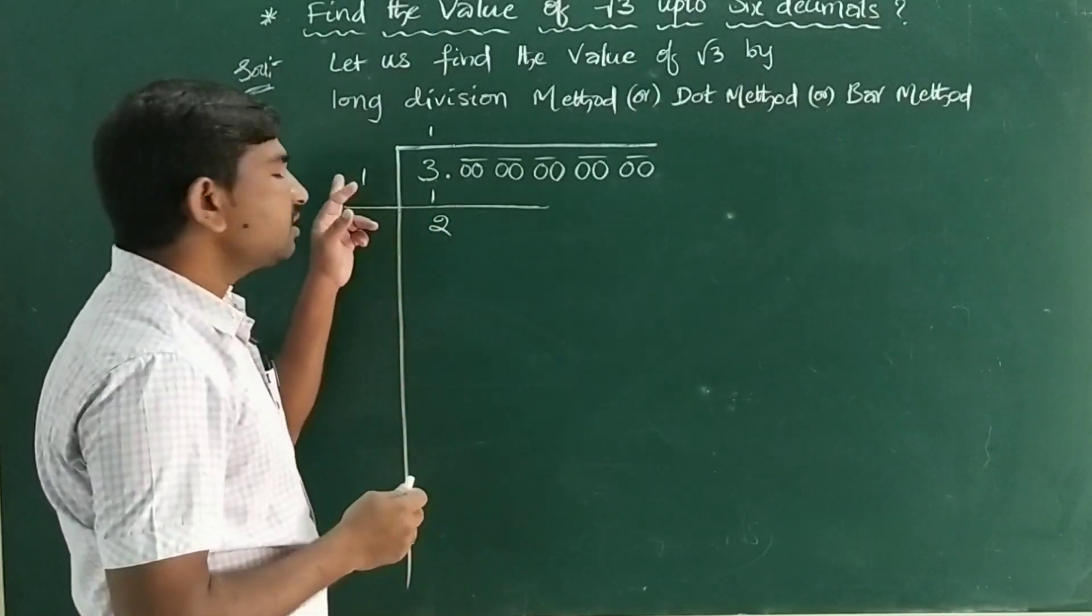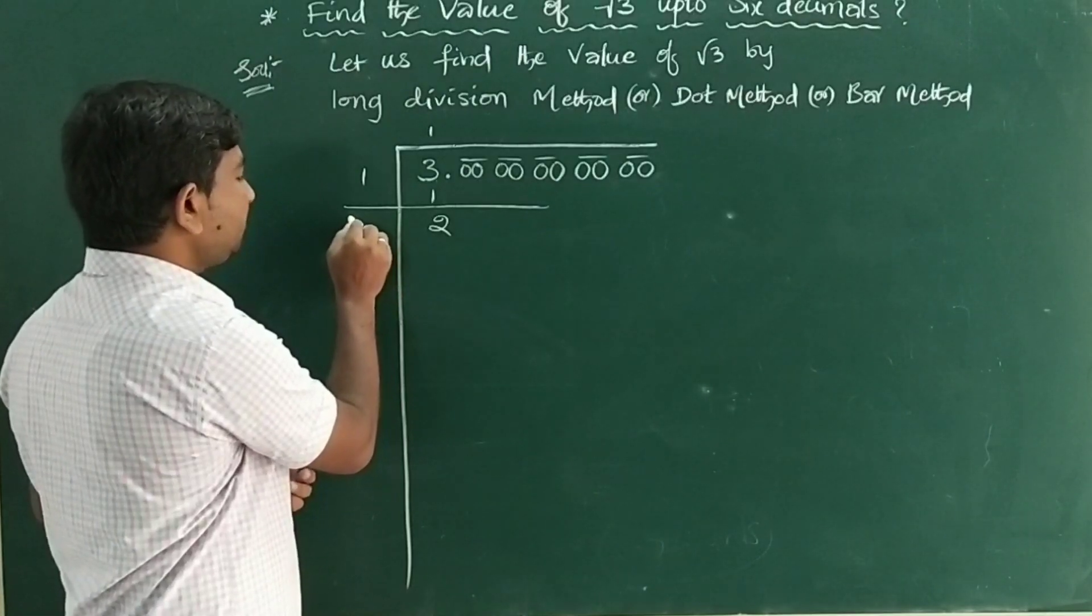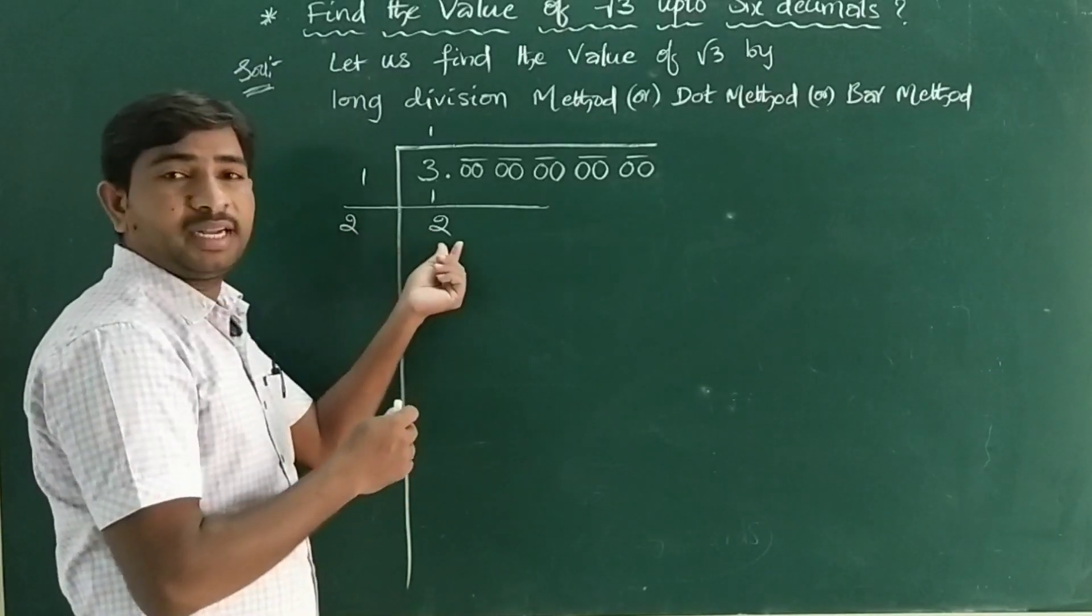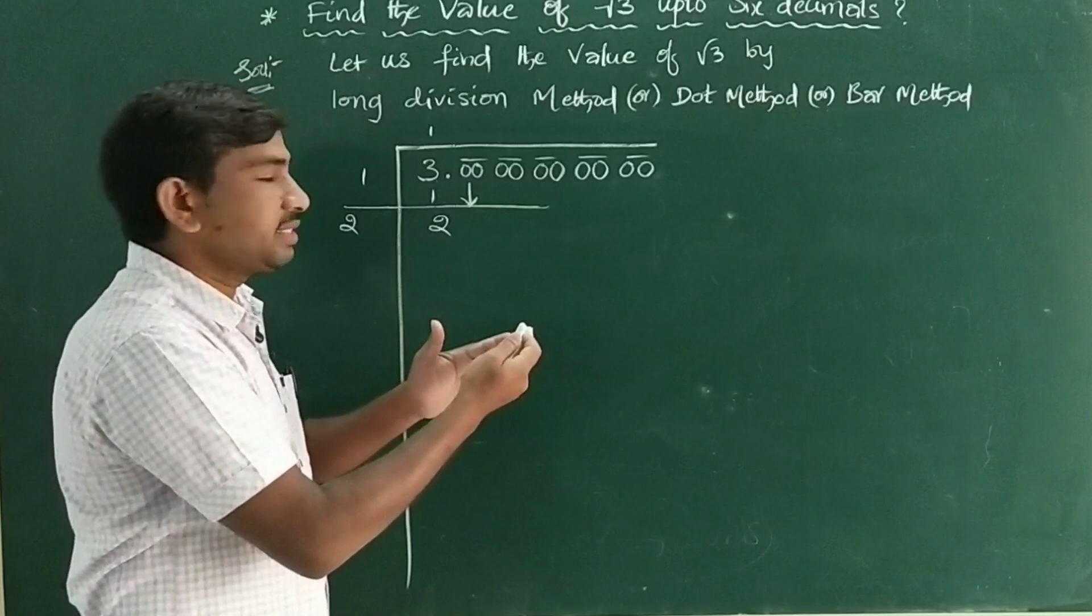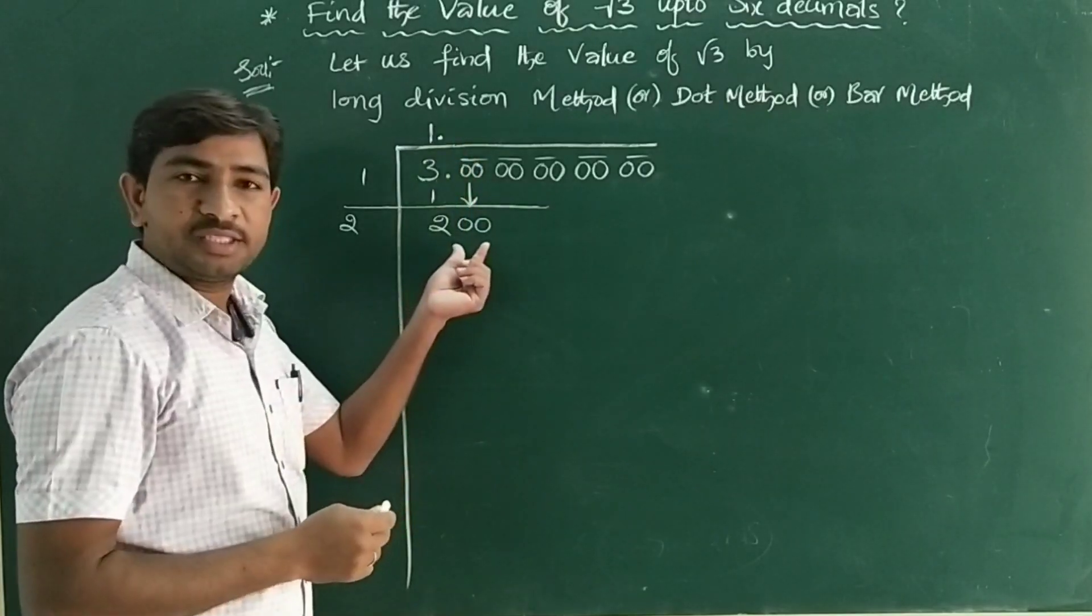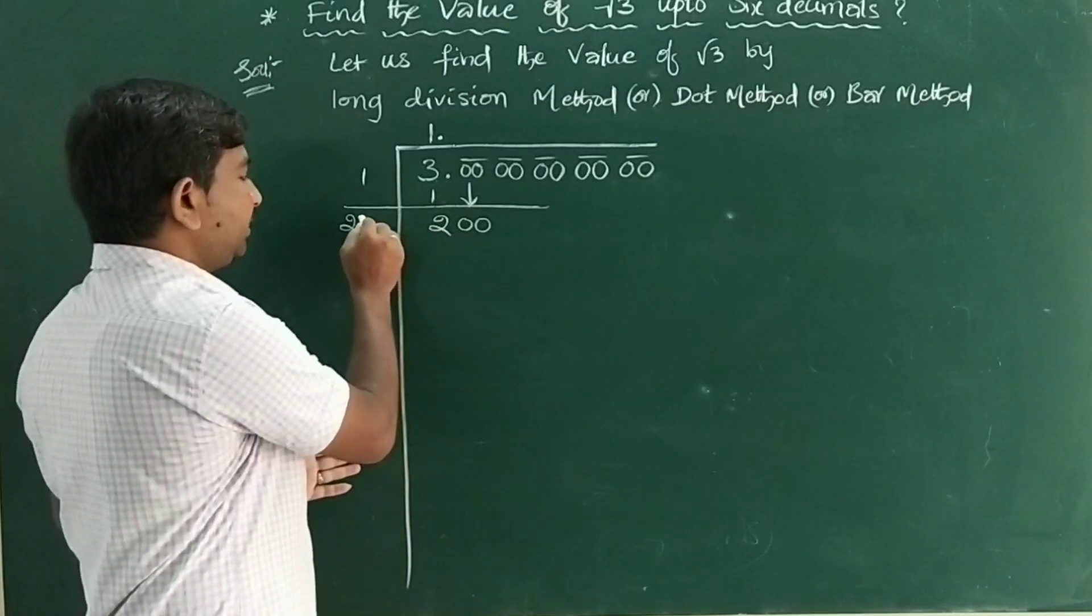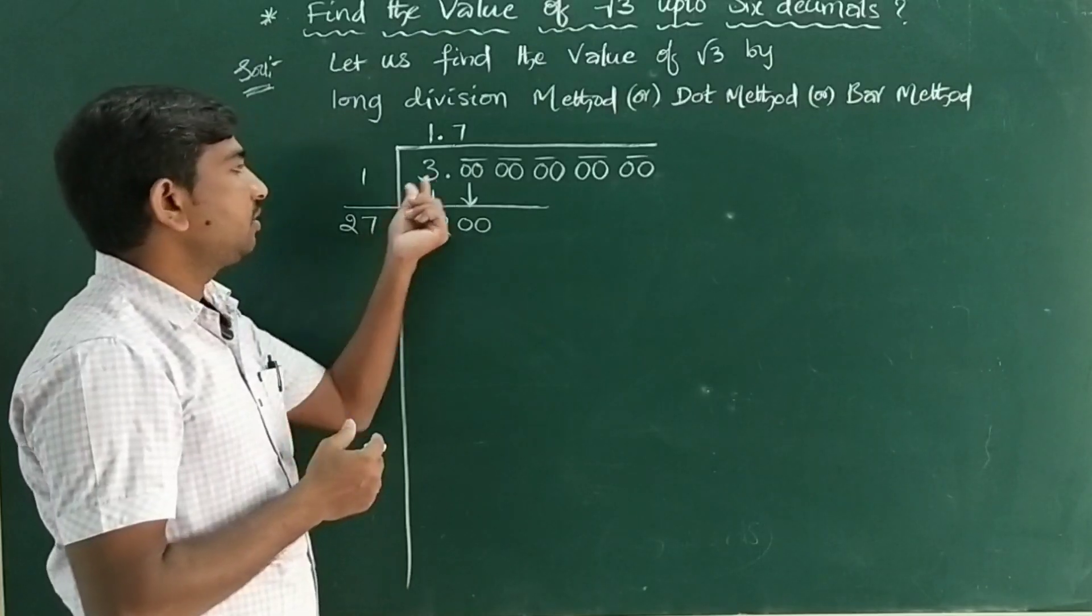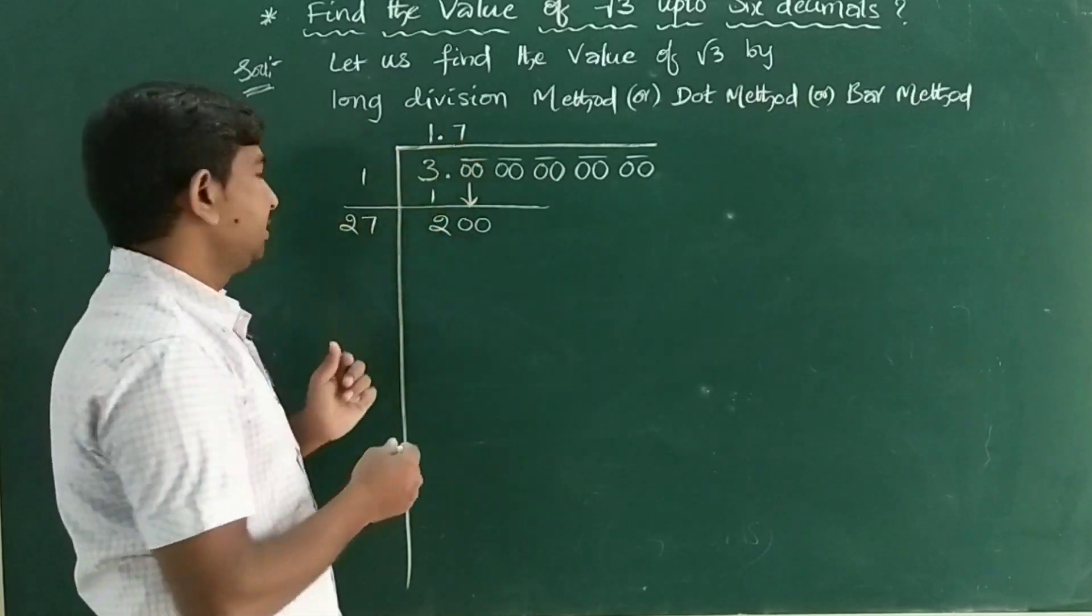Now the first step, most important: this 1 becomes 1×2, or double, which is 2. If you write any number beside this 2, it will become 21, 22, 23, and so on. Bring down the next pair of zeros, so it becomes 200. The nearest perfect square is 27×7.